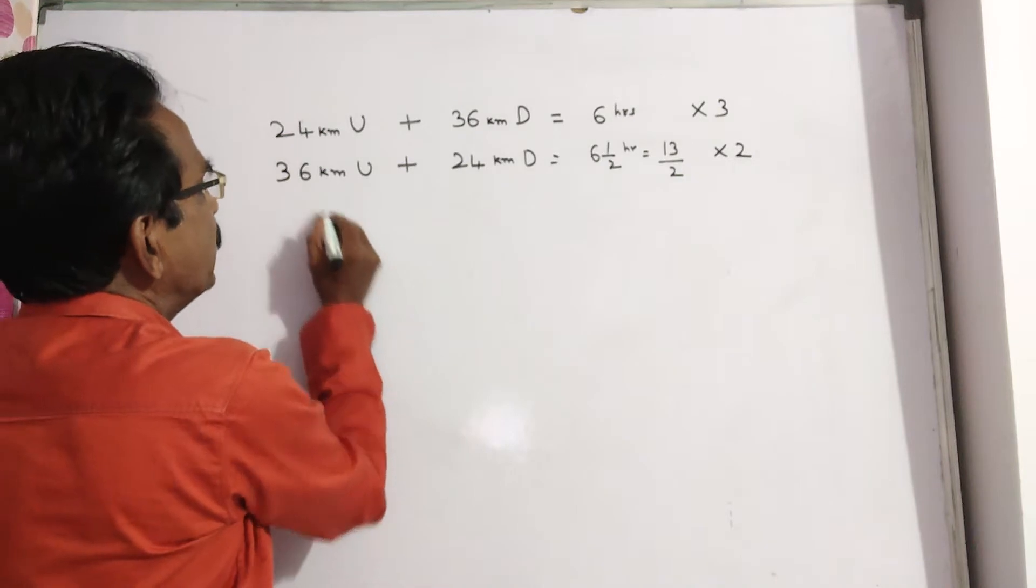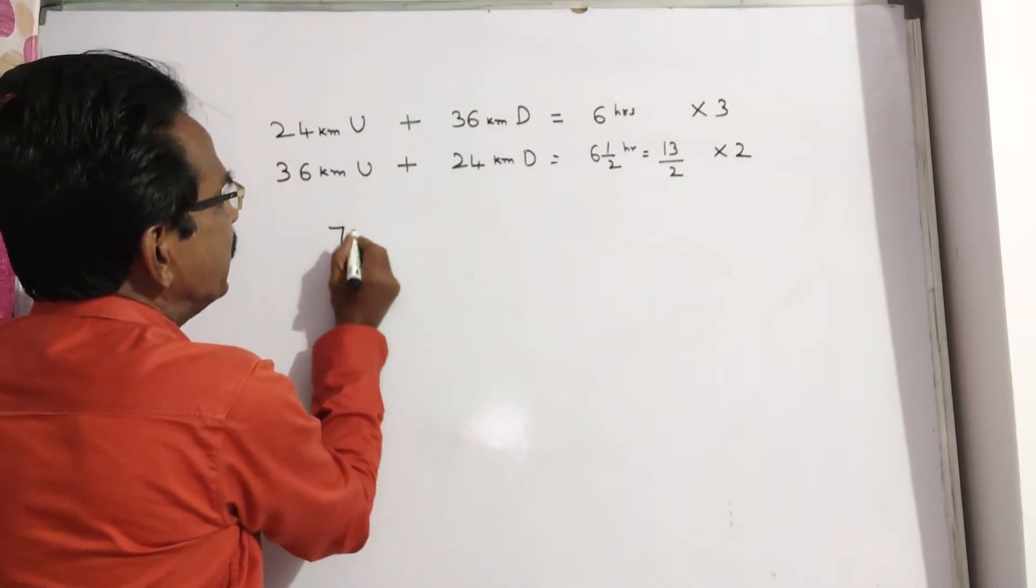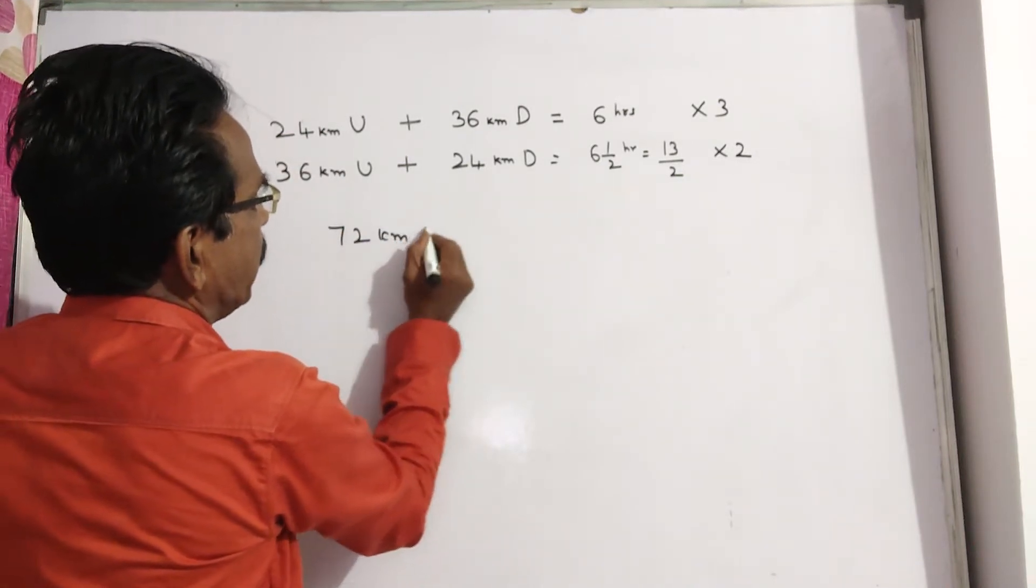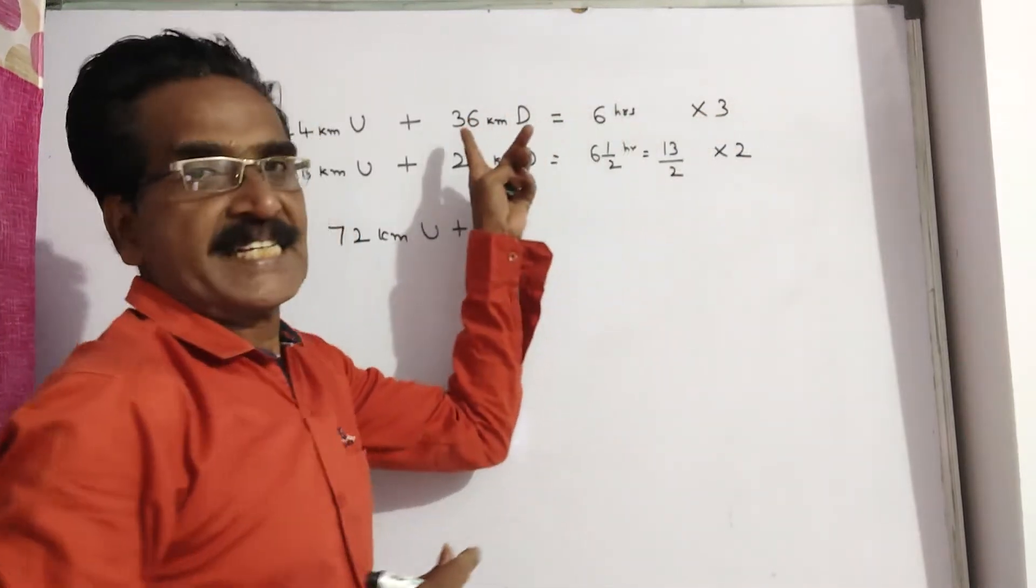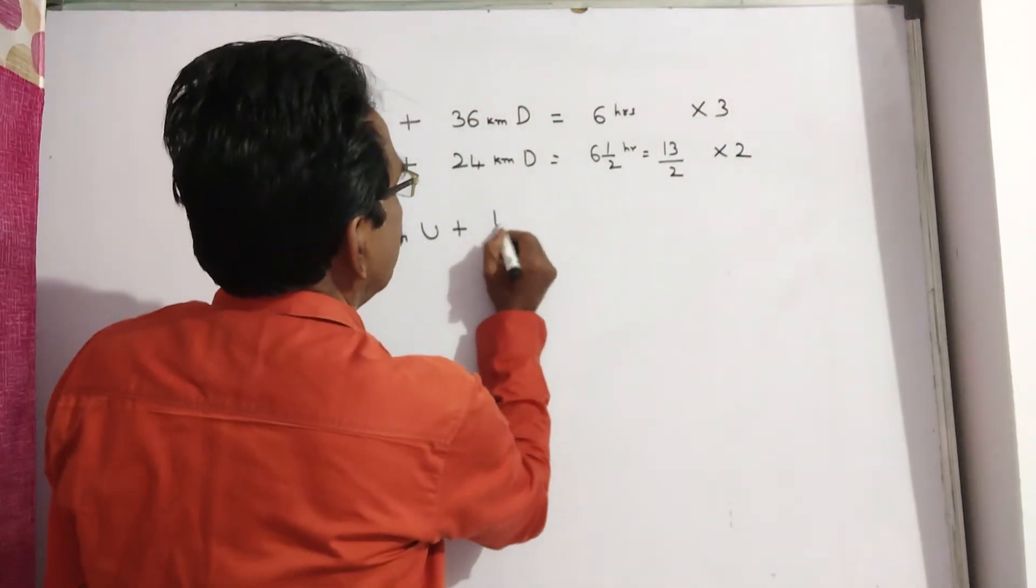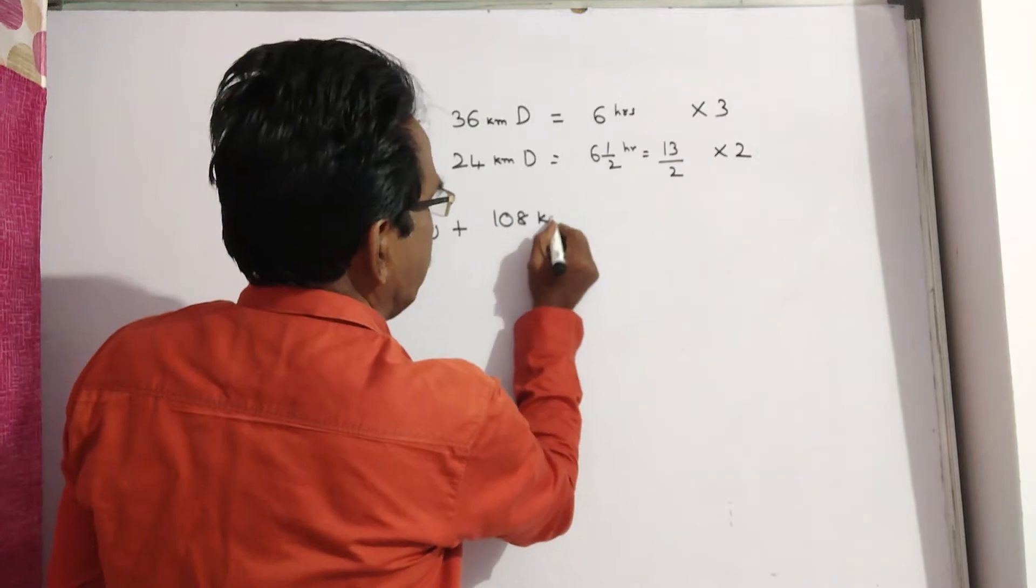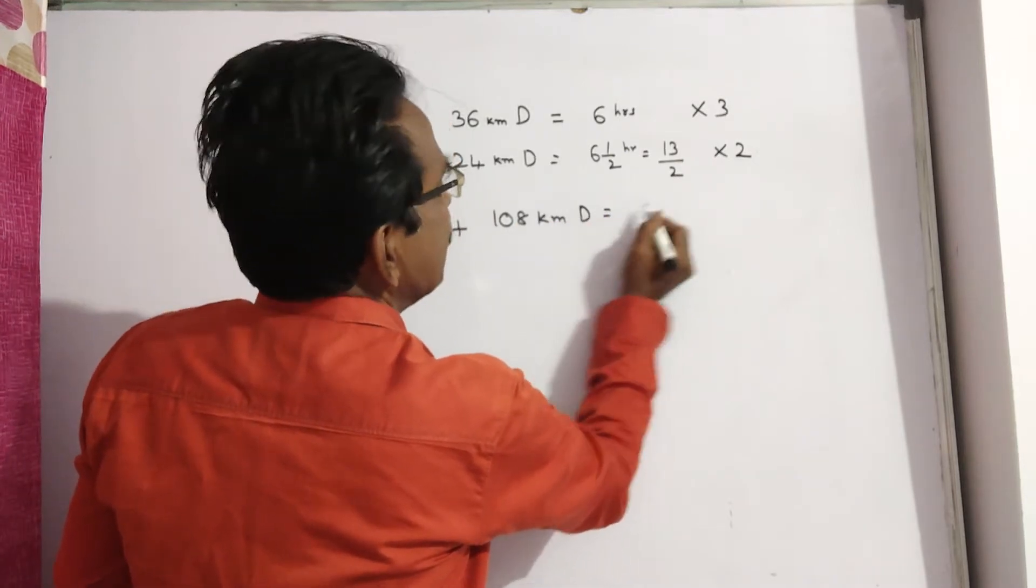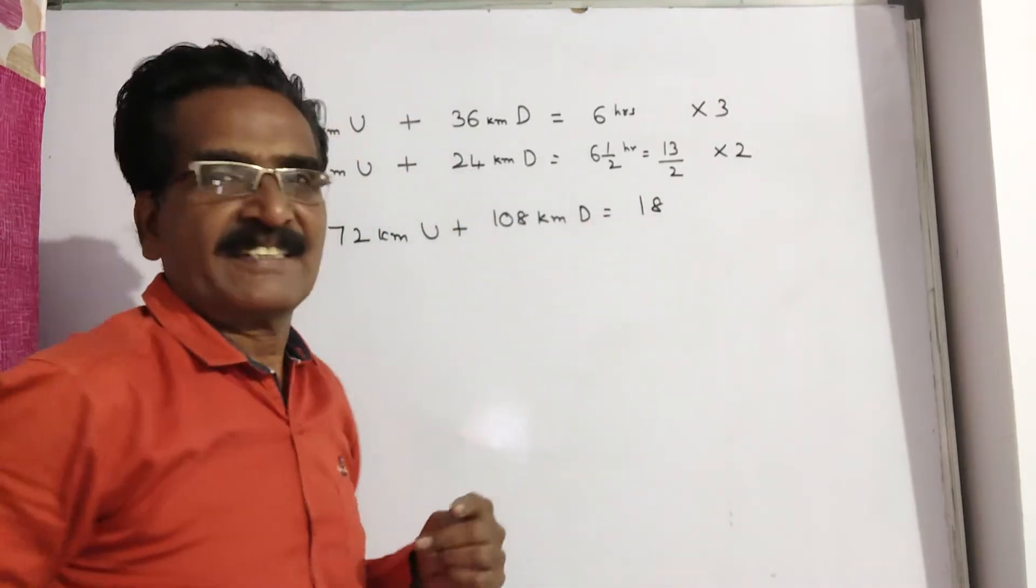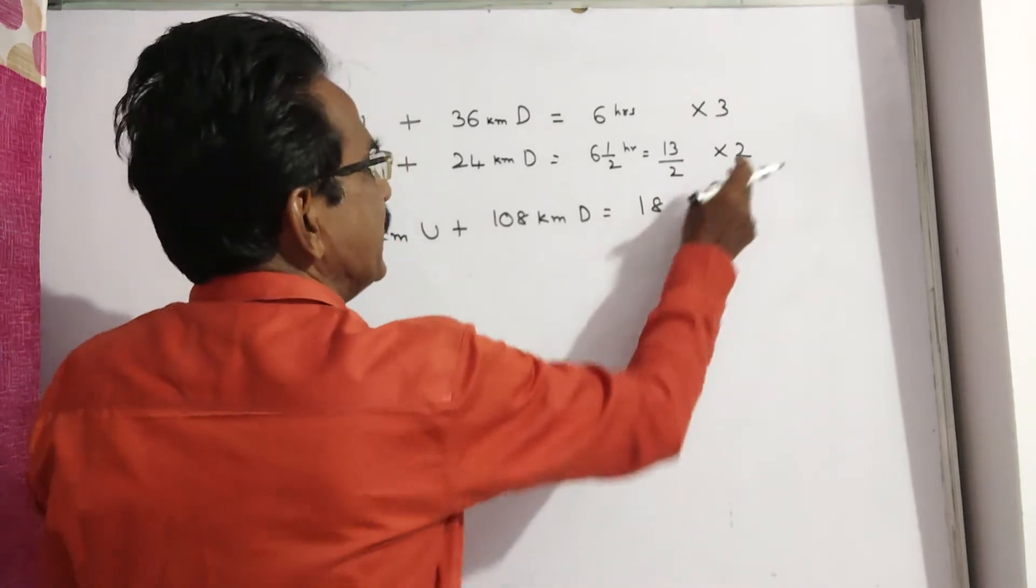3 into 24, 72 kilometers upstream plus 3 times 36, 108 kilometers downstream takes 3 times 6, 18 hours.